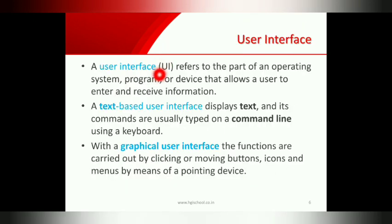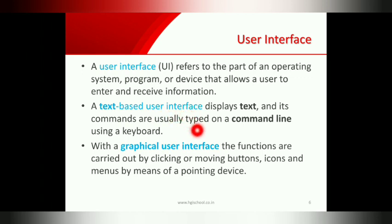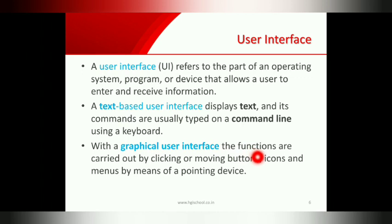User interface refers to the part of the operating system, program, or device that allows us to enter and receive information. There are two types of interfaces: text-based user interface and graphical user interface. Text-based user interface is also known as command line interface or command user interface — it displays text, meaning we enter commands with the help of a keyboard. In graphical user interface, we can use a mouse to click and move buttons, icons, and menus on the screen.